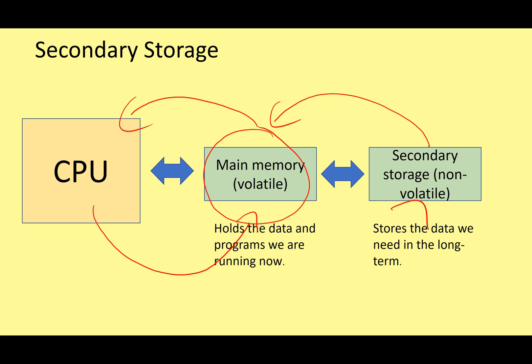You might be wondering why we need main memory at all. That's really because secondary storage is just too slow — you can't feed data from secondary storage directly to the CPU. It just wouldn't work; it would take too long, and the CPU would spend most of its clock cycles waiting for data and instructions.